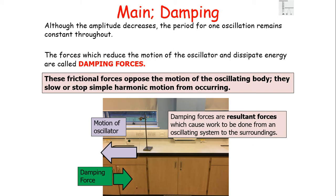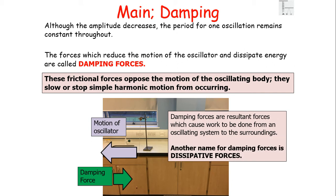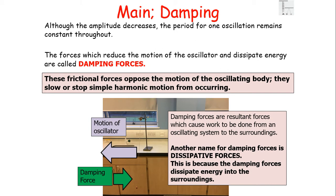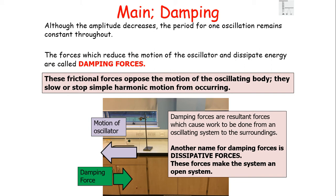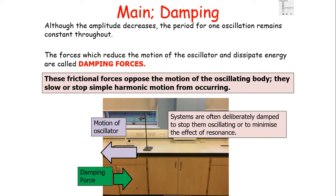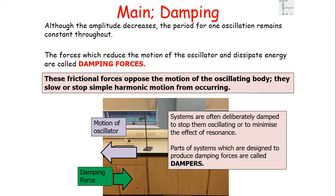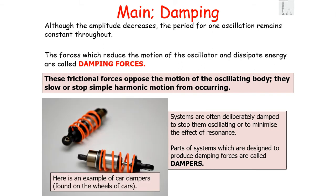Dampening forces are resistive forces which cause work to be done from an oscillating system to the surroundings — another name for them is dissipative forces, as they cause energy to be dissipated into the surroundings, transferring from the mechanical system to internal energy. These forces make the system an open system. Systems are often deliberately damped to stop them oscillating or to minimise resonance. Parts of systems designed to produce dampening forces are called dampers — for example, car dampers on wheels stop a car oscillating up and down when going over bumps.